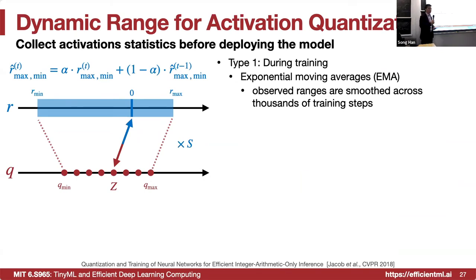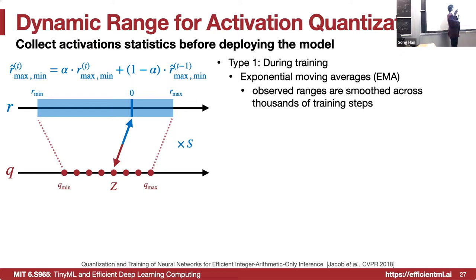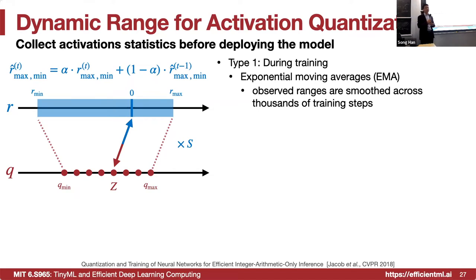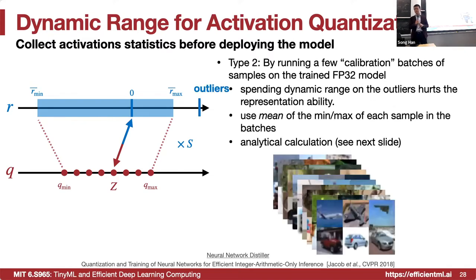How do we determine r_min and r_max for activations? There are different approaches. One approach introduced in a 2018 paper is to use exponential moving average (EMA) to update r_min and r_max. During training, you can find r_min and r_max at the current timestamp versus the previous timestamp, using this smoothing method to update the range.